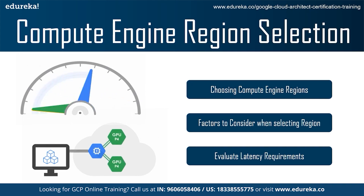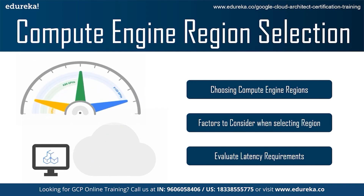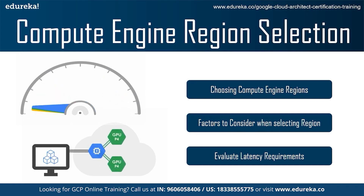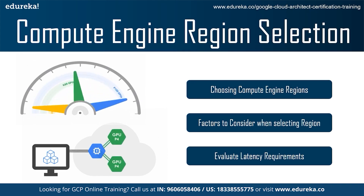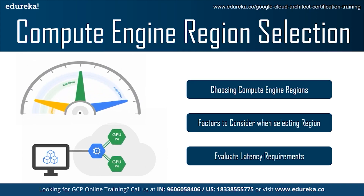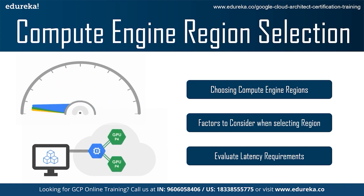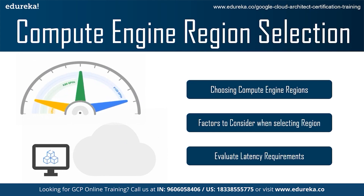The third best practice under region selection is evaluating latency requirements. Latency is often the key consideration for region selection because high user latency can lead to an inferior user experience. You can affect some aspects of latency, but some are outside of your control. Region selection can only affect the latency to the Compute Engine region and not the entirety of the latency. The first subcategory is last-mile latency, which differs depending on the technology used to access the internet.